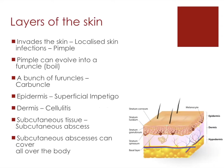Talking about the different problems that Staph aureus can cause across the layers of skin: if it invades the skin, it can lead to localized skin infections and the formation of a pimple. This pimple can evolve into a furuncle, which is another word for a boil. If several boils bunch together, this leads to a carbuncle, which is a more severe form. If it penetrates the epidermis, it can cause superficial impetigo, which is an infection of the epidermis.